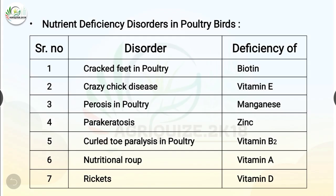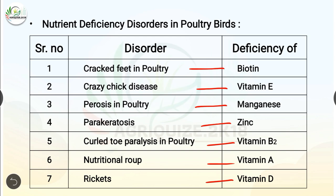Let's know more about nutrient deficiency disorders in poultry birds. Cracked feet in poultry is caused due to deficiency of biotin. Crazy chick disease is caused due to deficiency of vitamin E. Perosis in poultry is due to deficiency of manganese. Parakeratosis is due to deficiency of zinc. Curled toe paralysis in poultry is due to deficiency of vitamin B2. Nutritional roup is due to deficiency of vitamin A and rickets is due to deficiency of vitamin D.